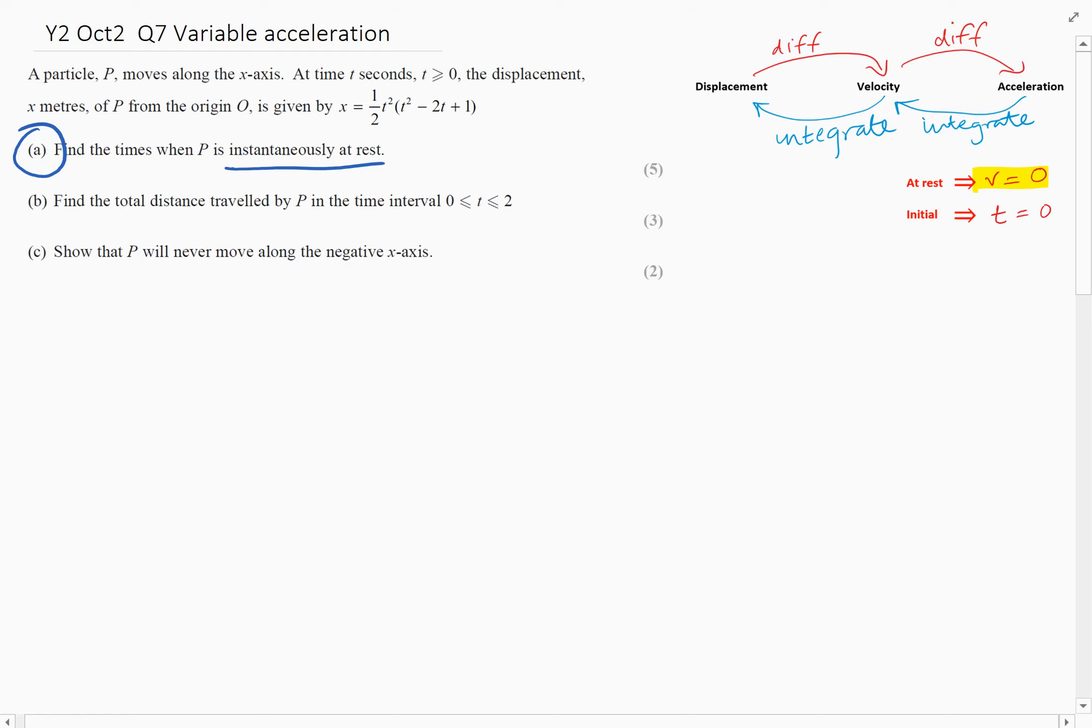So we're going to need to work out where the velocity is zero. And since we're given the displacement X, if we want to find the velocity from displacement, remember you're going to have to differentiate. So we just differentiate X.